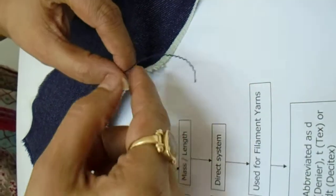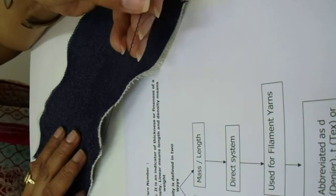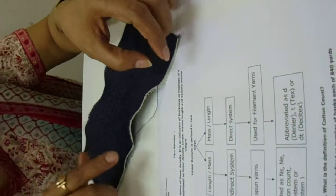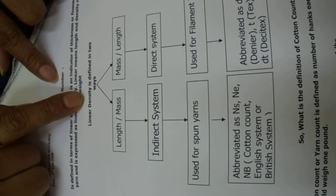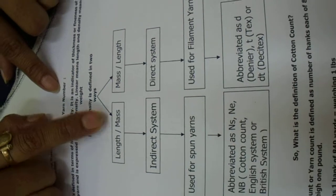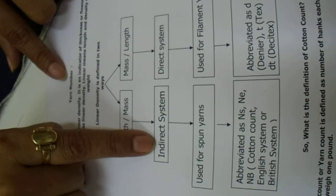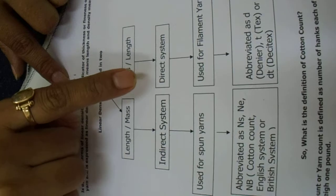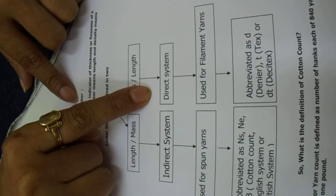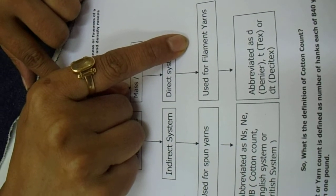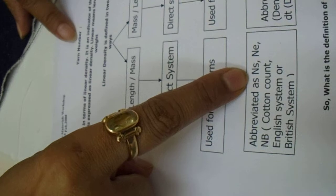In the yarn number class, we calculate the thickness or diameter of yarn. This is generally measured in terms of linear density. Linear density — 'linear' means length, 'density' means weight. It is defined in two ways: length per unit mass, and mass per unit length. Length per unit mass is the indirect system, generally used for spun yarns. The direct system is generally used for filament yarns.